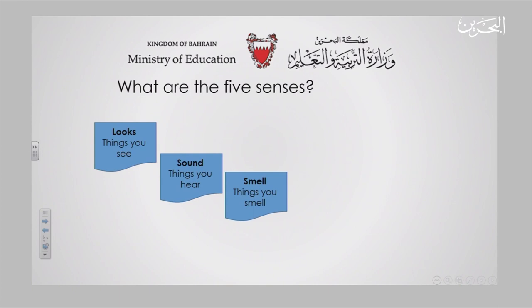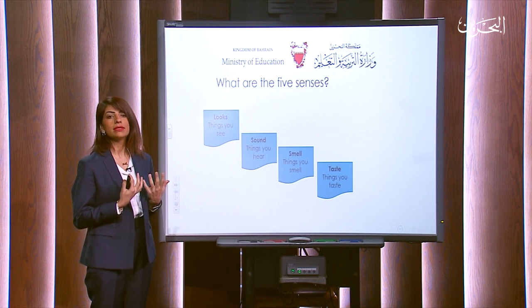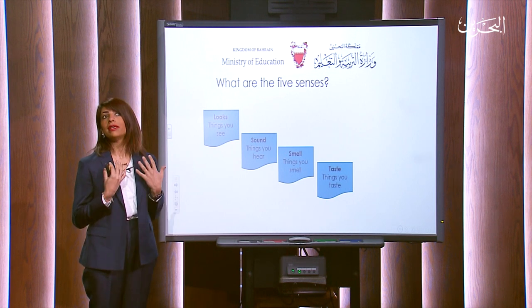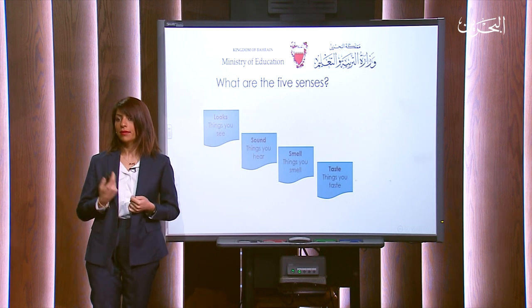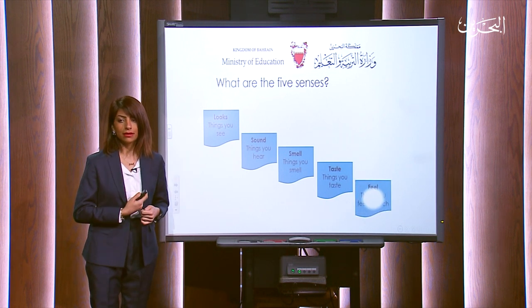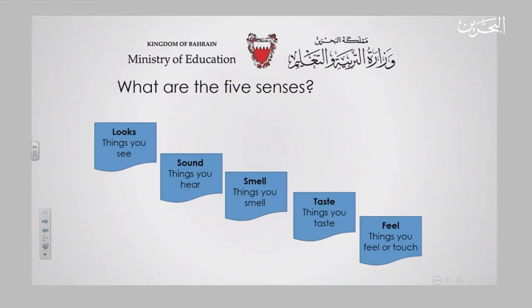Number three: smell — it's about the things that you smell; for example, you could smell food or fresh air. Number four: taste — it's about the things that you eat and taste, or maybe someone describes something to you and you could imagine the taste. Last but not least: feel — it's about the things that you touch, or the feeling that comes to you when you see or try something.